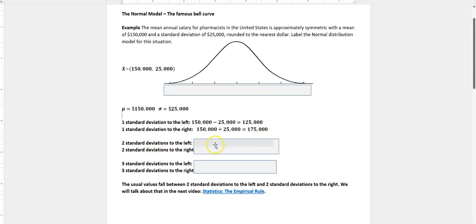To get two standard deviations to the left or the right, we're going to add two standard deviations. So $150,000 minus two times $25,000 - now you're taking $50,000 off, you're down to $100,000. Or you're adding $50,000, you're up to $200,000.